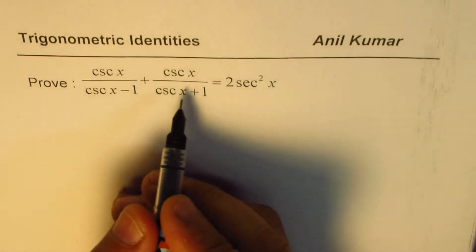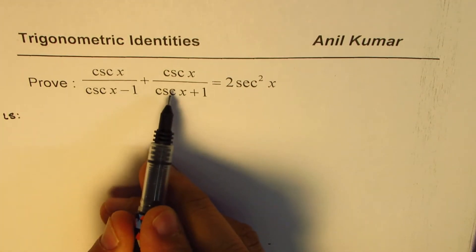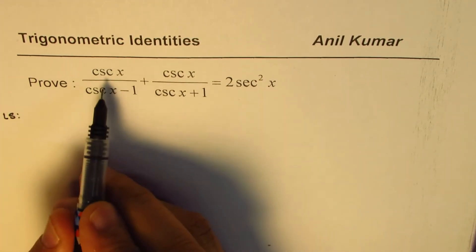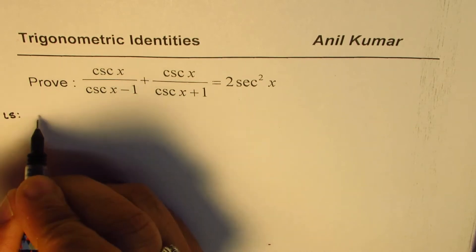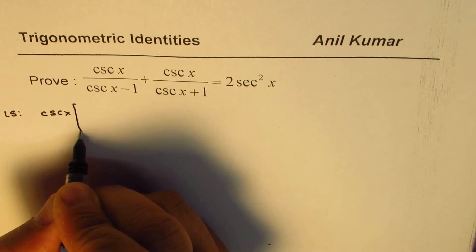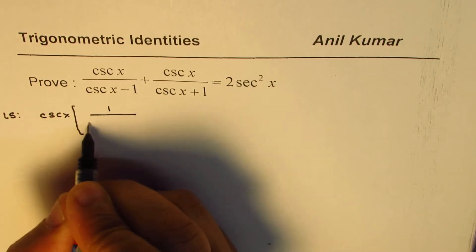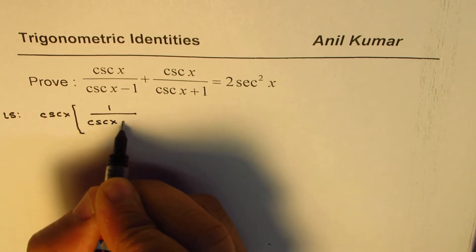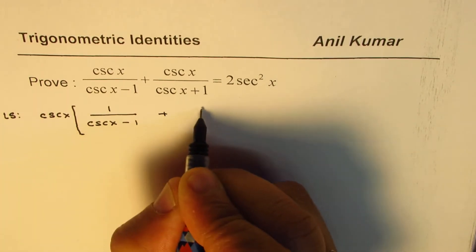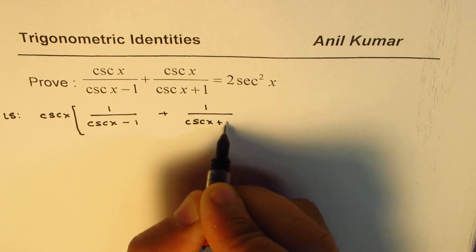Now, let us begin from the left side, which seems to be more complicated. We will simplify this as the right side. So, we can take cosecant x common. We get cosecant x common and we could write this expression as 1 over cosecant x minus 1 plus 1 over cosecant x plus 1.